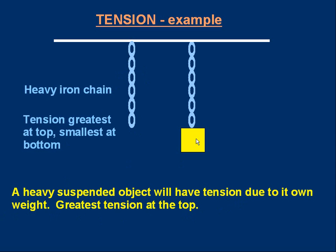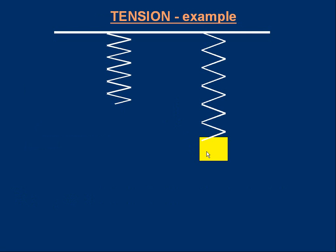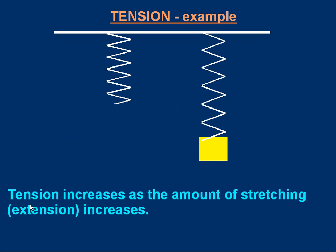I could hang something off the chain as well. In that case, the tension at the top would equal the weight of the chain plus the weight of the object, but the tension at the bottom would only be the weight of the object. We often encounter problems with stretching things like elastic bands or springs. If you hang a weight on the spring, it stretches and the tension increases until the tension balances the weight. The tension increases as the amount of stretching — or extension — increases. Extension means the increase in length compared to the original length; the more the extension increases, the more the tension increases.